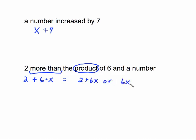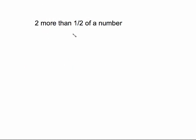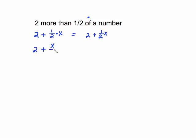'Two more than half of a number' — 'two more than' is a plus, and 'half of' means times one half. So this is two plus one half x. Another way to take half of a number is to divide by two, so you can write x over two instead. You could also use the decimal 0.5, giving you 0.5x. All of those are the same and they're all acceptable.